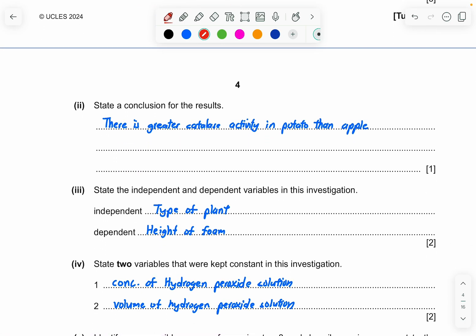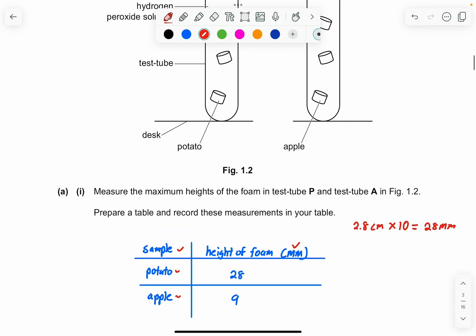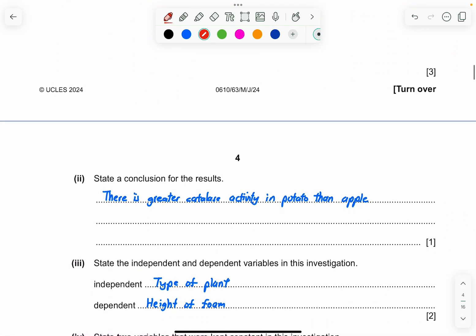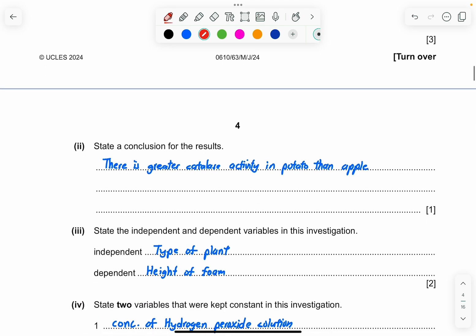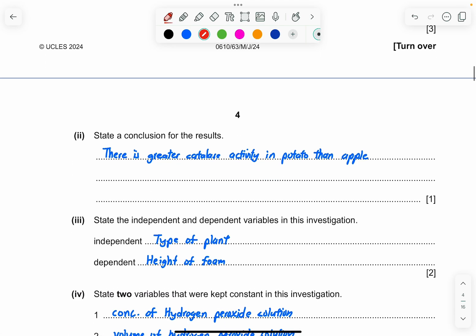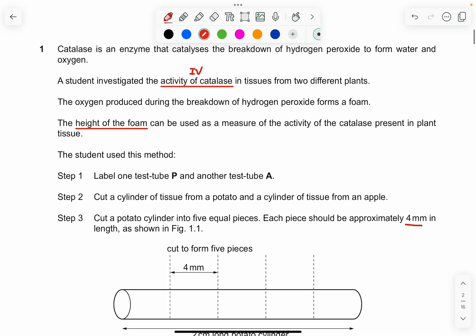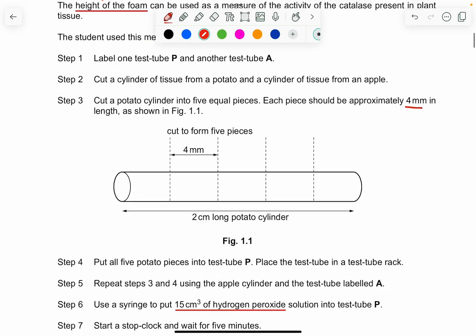Part three. State the independent and dependent variable in this investigation. So it can be either the species of the plant, the type of plant, or the type of tissue. Why? Because we are using either potato or apple, which are both different species of plants, or you can say that a different type of plant also. The dependent variable, as we mentioned in the question that we highlighted here, is the height of the foam. This will be the DV.